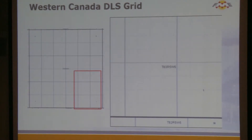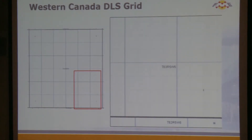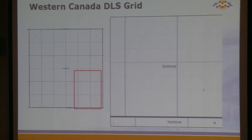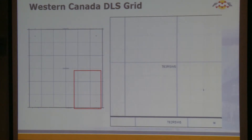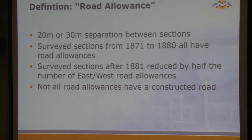I zoomed in a little bit so you can see where we start running into problems. Using the laser pointer, you can see there's a gap in the grid here and all along here. This is really weird because typically when we're dealing with grid systems, we don't have null space — everything is covered. So if I drill a well right there, if I do a spatial intersect, nothing shows up. That is a road allowance — 20-meter or 30-meter sections.